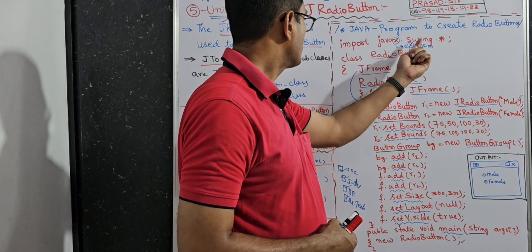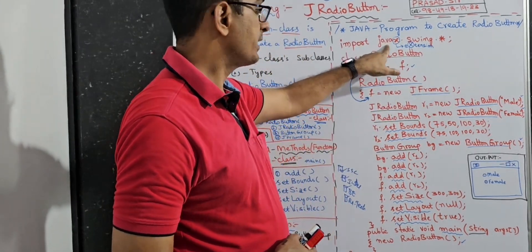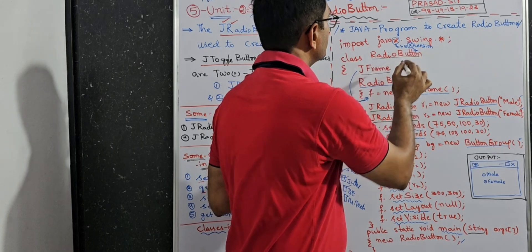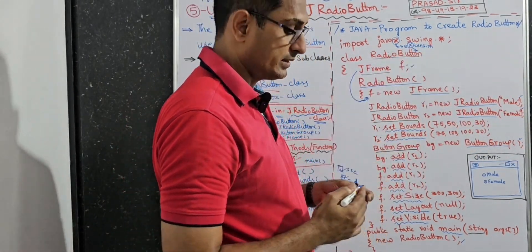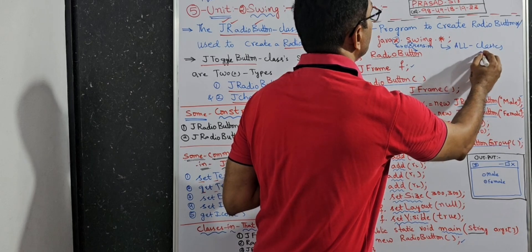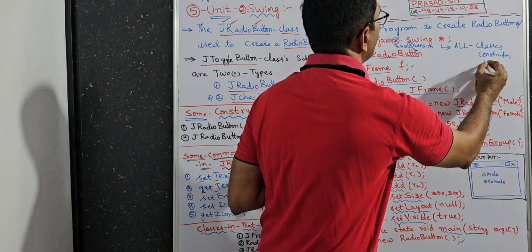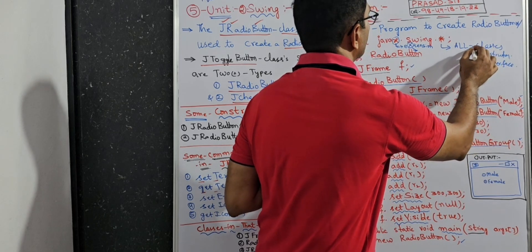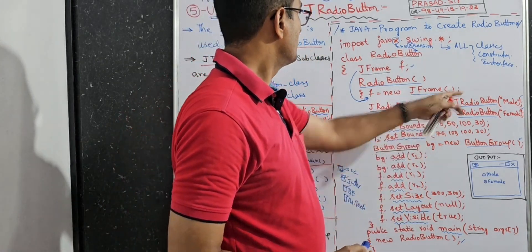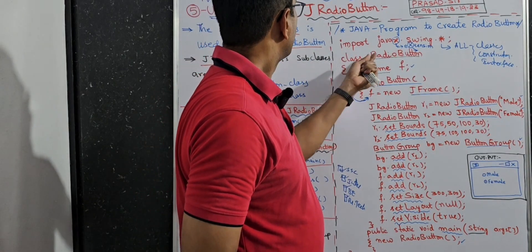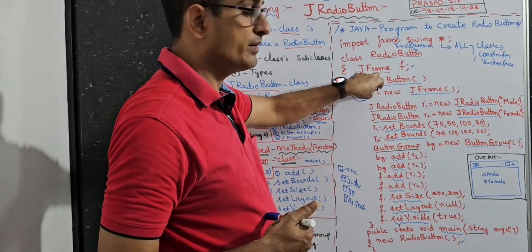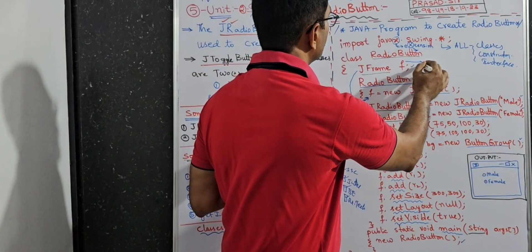In this program, some classes are JRadioButton. So swing is a package. The class keyword is used, and RadioButton is a user-defined class. JFrame is a class, and F is an object. So here F is an object created using the new keyword. JFrame is a constructor here — this is the syntax for creating an object: class name, space, object name, equals new keyword, constructor, semicolon.